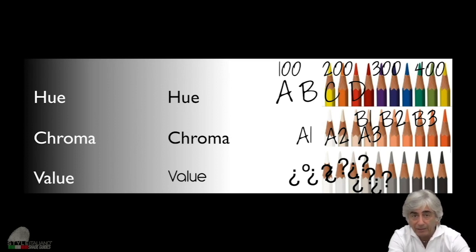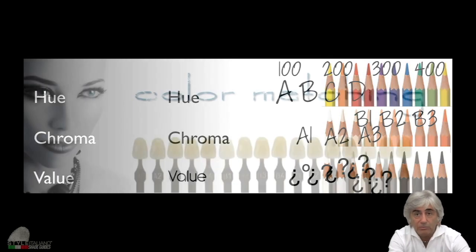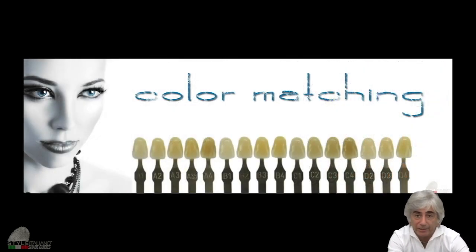What is very difficult at the end is to check the perfect hue. Because when you have the right value and the right chroma, to choose the hue is really very difficult. Why? Because the human eye sensitivity is not so high for the hue. So what about the color matching in dentistry?